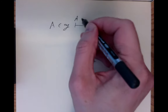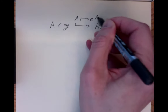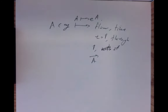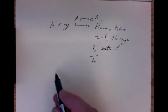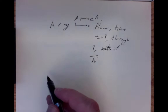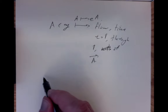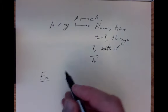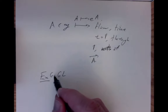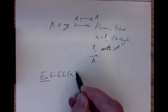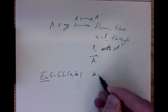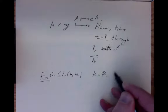We wonder why we would call it the exponential map. The obvious observation is that in an example, if we take our group G to be GL_n(K), where k is either the real numbers, complex numbers, or quaternions, then the left-invariant vector field was simply this expression.